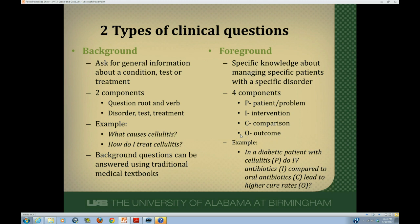A much more specific foreground question about cellulitis might be: in a diabetic patient with cellulitis, do IV antibiotics compared to oral antibiotics lead to higher cure rates? You can see this is a much more detailed and higher order question than background questions. The P, I, C, and O are designated here to show the components of this question. When actually asking a question, you would not insert the P, I, C, or O labels into the question itself.